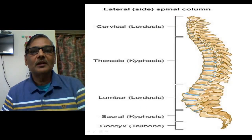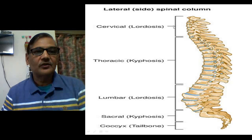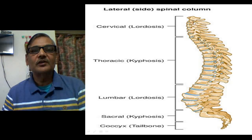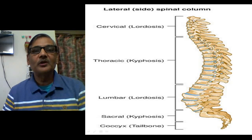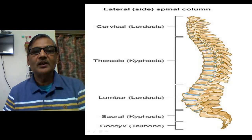We can also consider vertebrae as an example of serial homology. Our vertebrae, starting from the anterior portion to the end, can be differentiated as cervical, thoracic, lumbar, sacral, and caudal vertebrae. Structurally these vertebrae are different, but their origin pattern — when they start developing in embryonic life — is the same manner. Bone tissues or bone cells start accumulating similarly to give rise to this supporting structure, but later they gain variation in morphology and help in performing different functions.